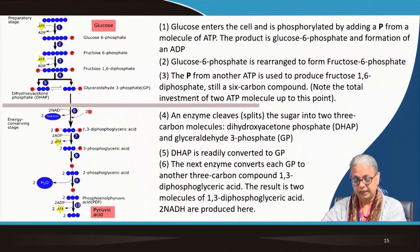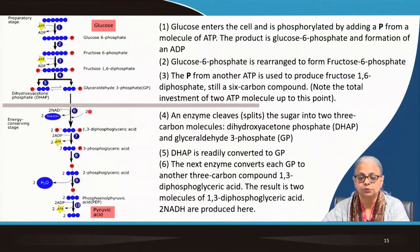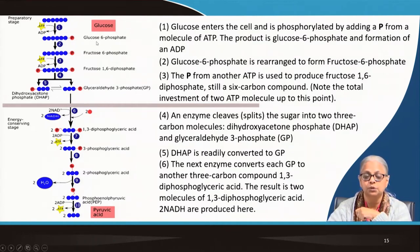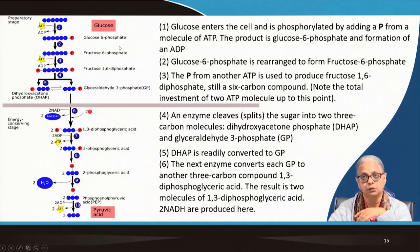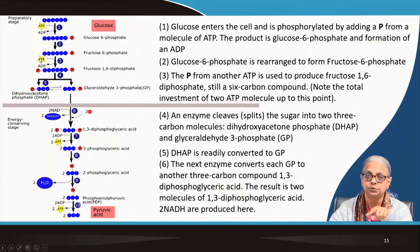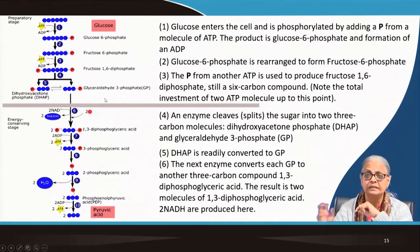Let us go through some details about glycolysis. Here we have the glycolysis pathway and we start with glucose, a C6 compound. One ATP is lost and one phosphate is attached to the glucose molecule to form glucose-6-phosphate. This is a low energy phosphate bond. It is then rearranged to give fructose-6-phosphate, which is then converted to fructose-1,6-diphosphate by utilizing one more ATP.